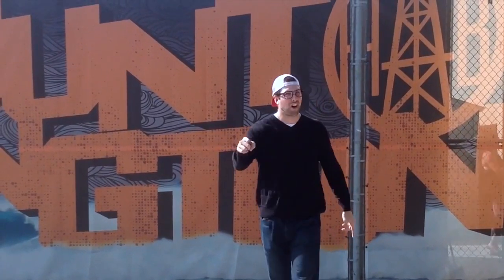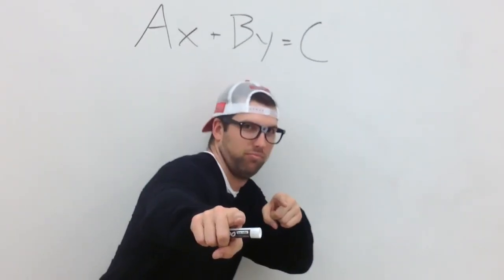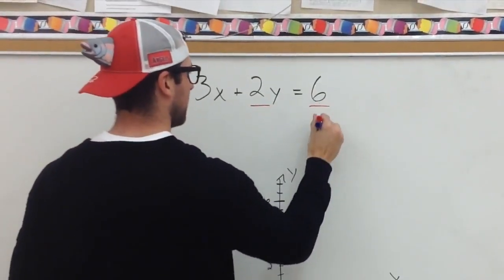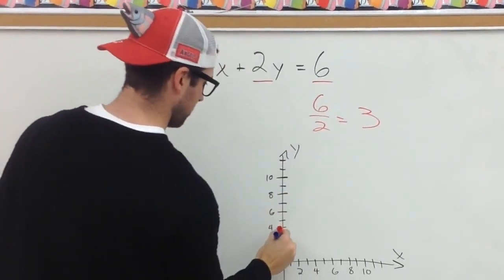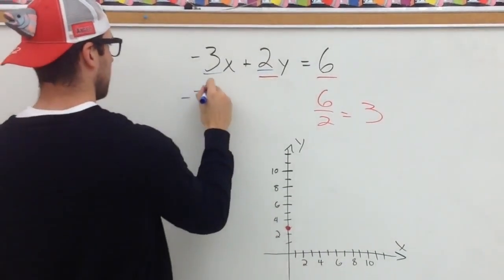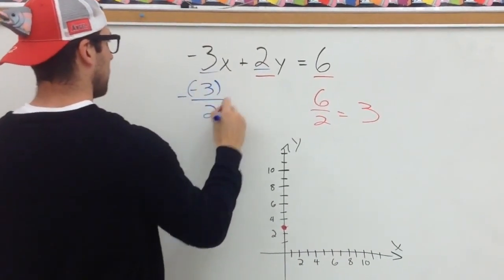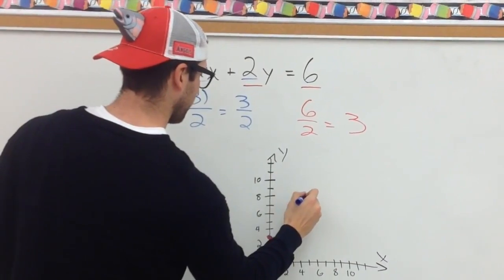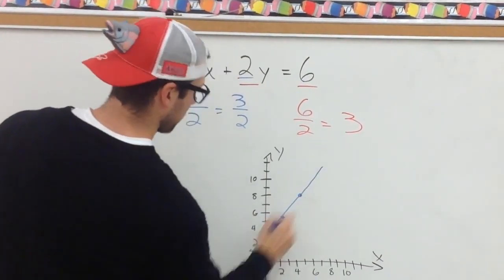Remember standard form — the hardest one: Ax plus By equals C, no fun. Now I'm looking for that y-intercept using C over B, plot it, now you are prepped. After that, the slope's your best bet — negative A over B, tighter than a corset. From that point you got with C over B, using rise over run, graphing lines like Mr. D.